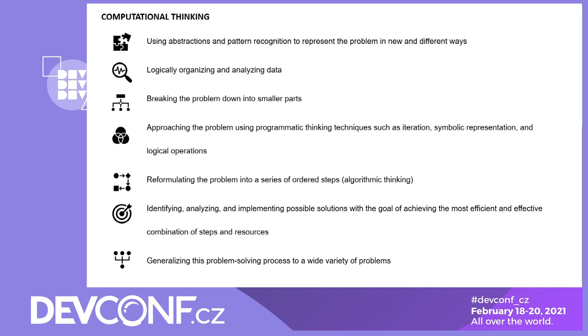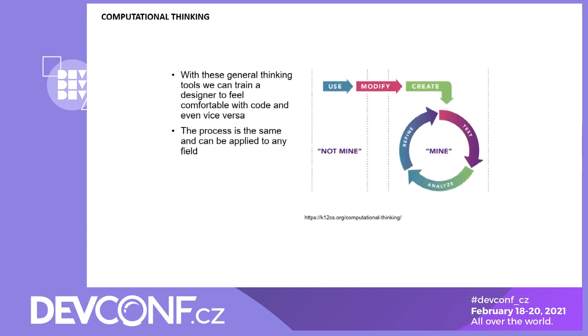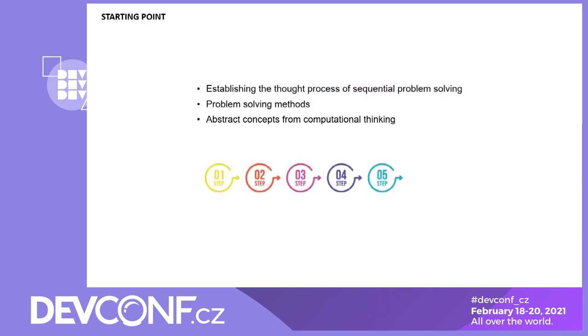Taking a specific problem and generalizing it to a variety of problems so it can be reused — this is the kind of approach you can use for anything, whether it's designing, coding, or cooking food. The thinking itself can be applied anywhere. We want to give them a framework that takes the vague, almost fuzzy process of creating buildings and makes them feel comfortable doing coding with computational design. The process is the same. You start with what you don't have, you modify it, you create, you find, it's recursion, and you update it. At the end of the day it's just sequences, problem-solving methods — abstract concepts from computational thinking lend themselves very well to solving problems in any field.